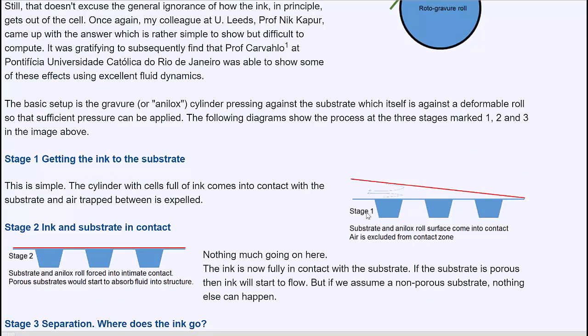The first part, stage one, is where the roller is coming into contact with the web. Nothing exciting is happening here. We have the cells, they're all full of ink and the only thing that has to happen is that the air which is here has to be swept out. No big deal.